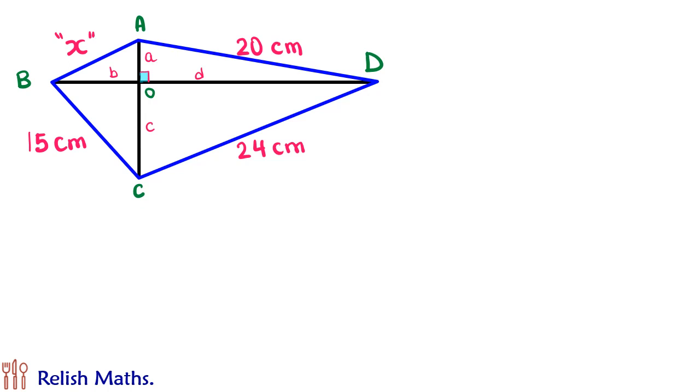Now in triangle AOB, it is a right angle triangle. Let us apply Pythagoras theorem in triangle AOB. So we get a² + b² = x². Similarly in triangle BOC, we will get b² + c² = 15².